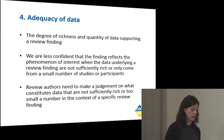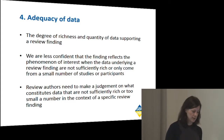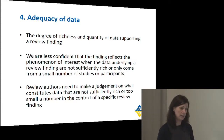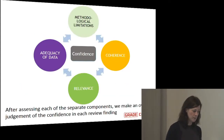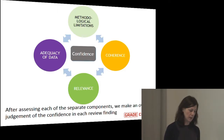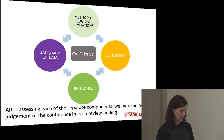The fourth component is adequacy of data: the degree of richness and quantity of data supporting the review finding. You might become less confident in your finding if you have very thin data, only a few studies, or a few participants. Again, this is a judgment call — there are no rules as to how many studies, how many participants, or how rich the data needs to be. You need to address this in relation to each particular finding. In the end, you make an overall assessment, and if you have serious concerns about any of the components, you go down one step in your confidence level.